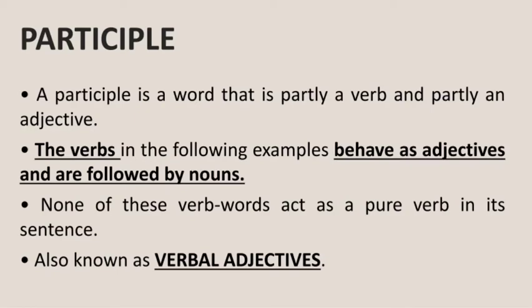In each of the sentences, none of the verbs are acting as pure verbs because all the verbs in these examples behave both as an adjective and as a verb. Therefore they are known as participles. Now underline the definition on page 161: 'A participle is a word that is partly a verb and partly an adjective.' Also, participles are known as verbal adjectives, because each participle behaves as an adjective as well as a verb.